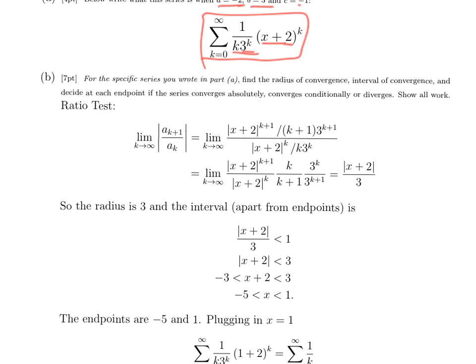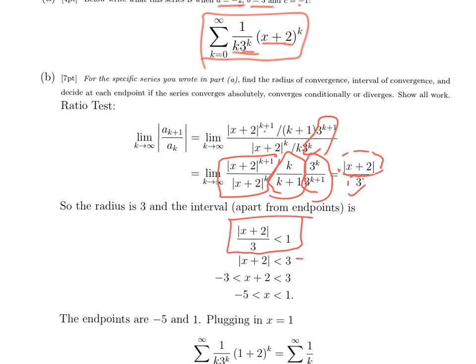We use the ratio test to find the radius of convergence. The x plus 2 to the k plus 1 over x plus 2 to the k represents the first factor. We have k plus 1 in the denominator and k in the numerator for the second factor, and 3 to the k plus 1 in the denominator and 3 to the k in the numerator. The x plus 2's cancel out, leaving an absolute value of x plus 2. The 3's leave a 3 in the denominator. The k over k plus 1 approaches 1. So we get a radius of 3.